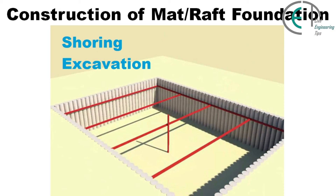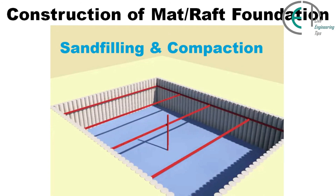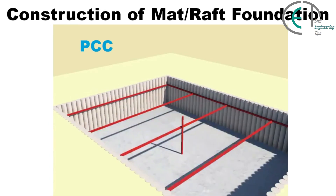The first step is to complete surveying around the area where we want to build the mat or raft foundation. Then we excavate the soil to the desired depth. When excavation is complete, we perform sand filling and compaction — compaction should be done very carefully and uniformly. When compaction is complete, we lay a plain cement concrete over the ground.